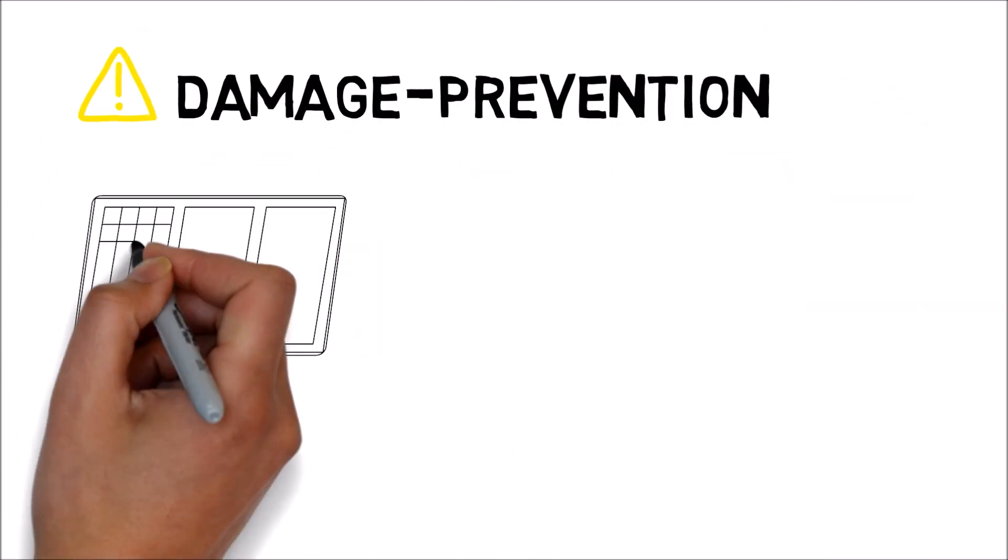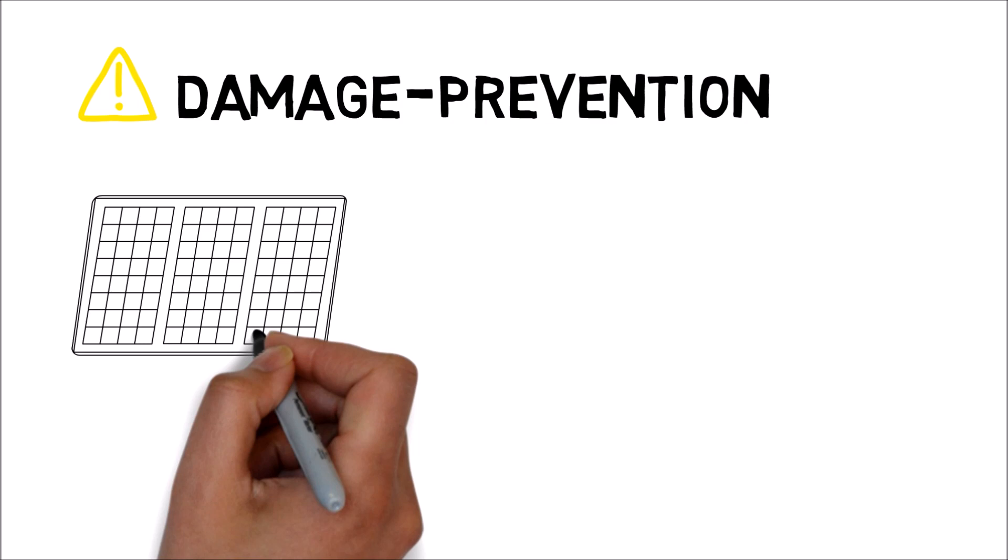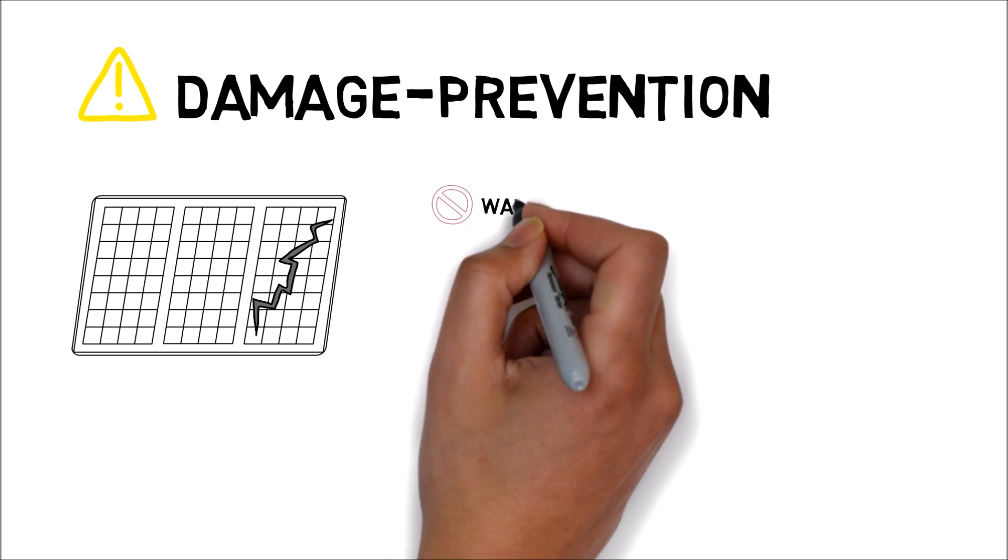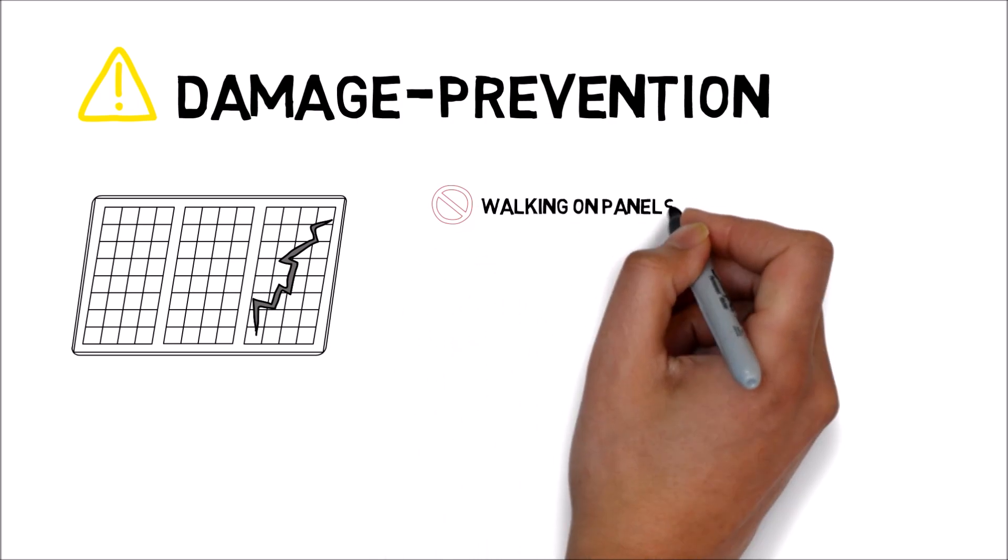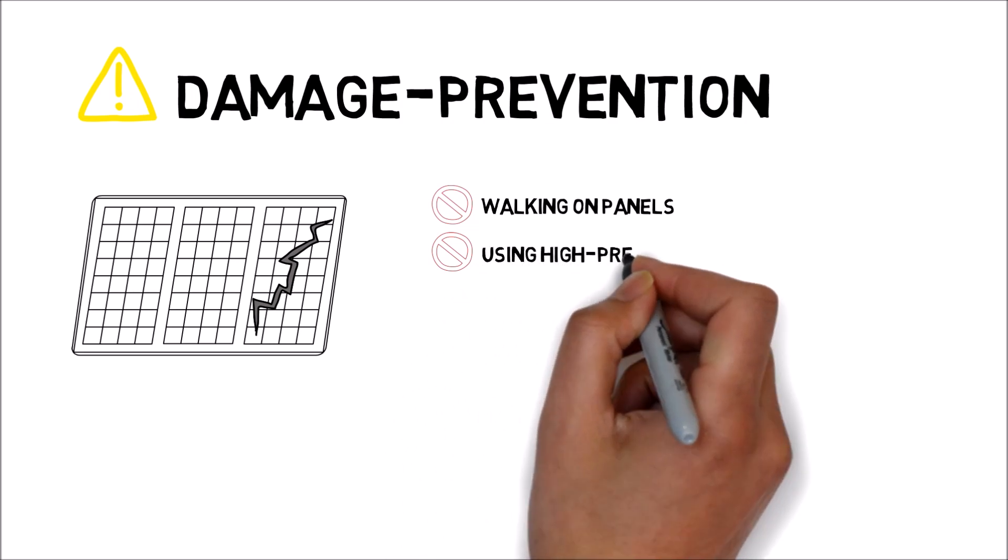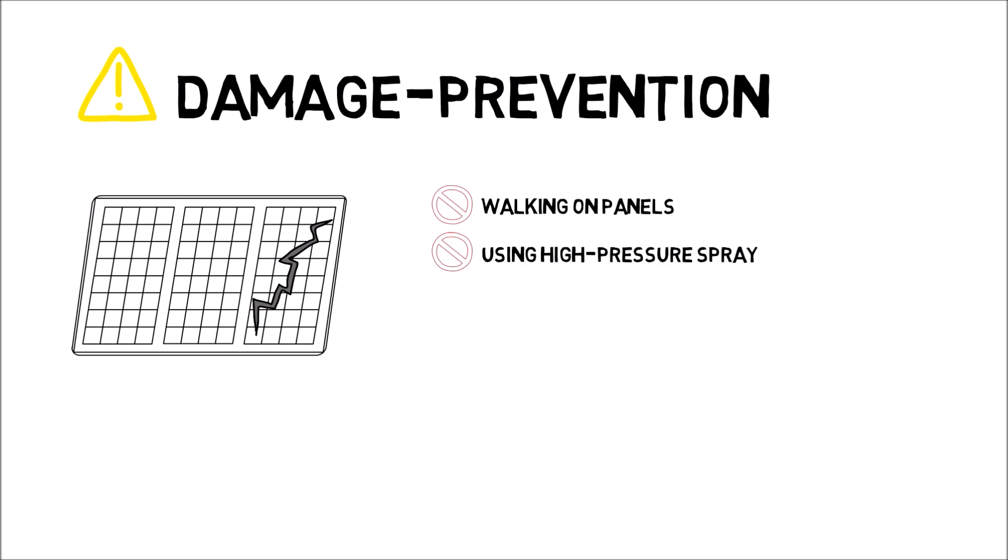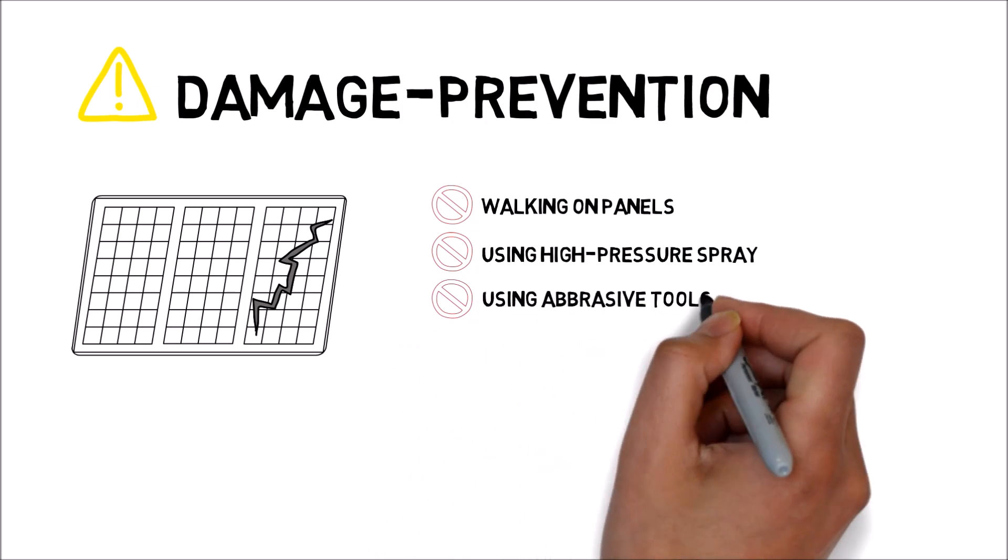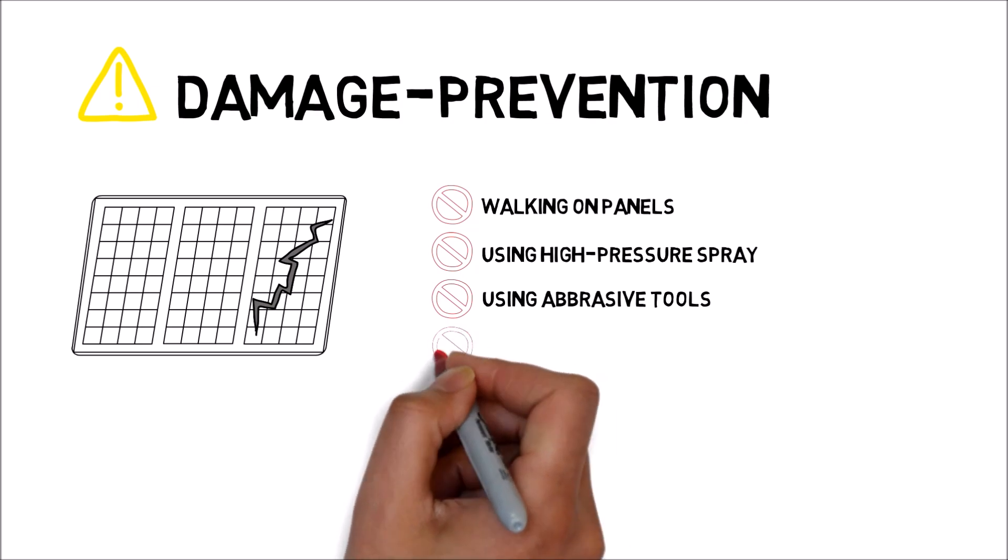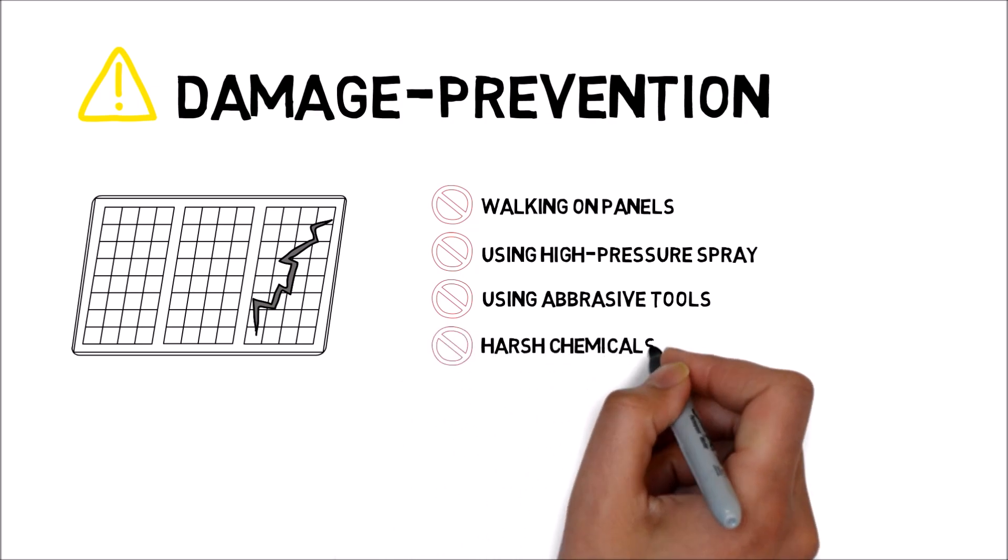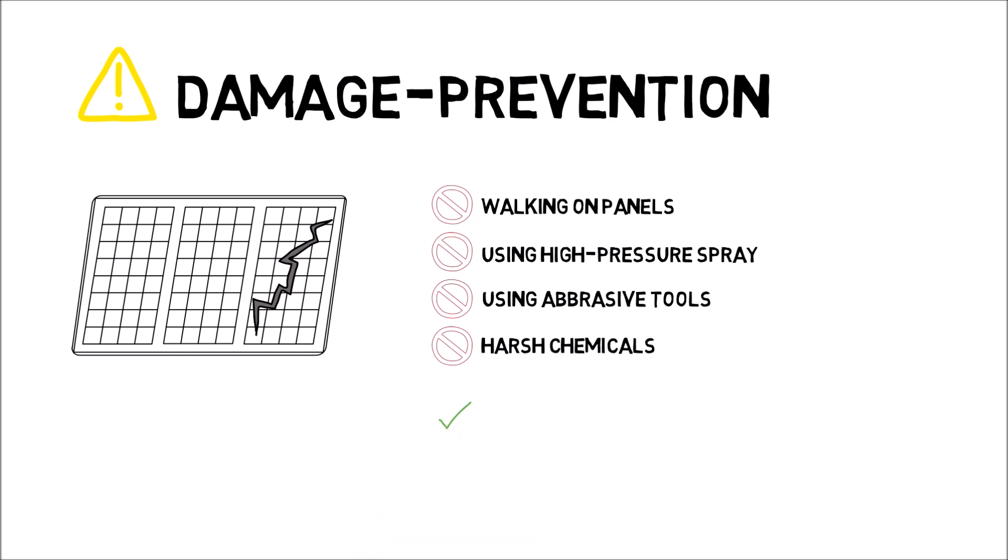Also, while solar panels are fairly resilient, still try to avoid potentially damaging them by doing the following: such as walking on the panels, which could cause microfractures, or using high-pressure spray on them, or using abrasive tools such as a shovel or a broom. Any harsh chemicals such as bleach are not recommended.